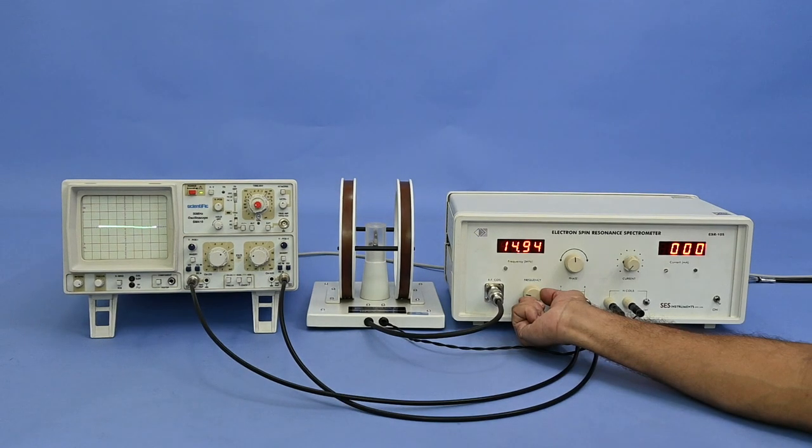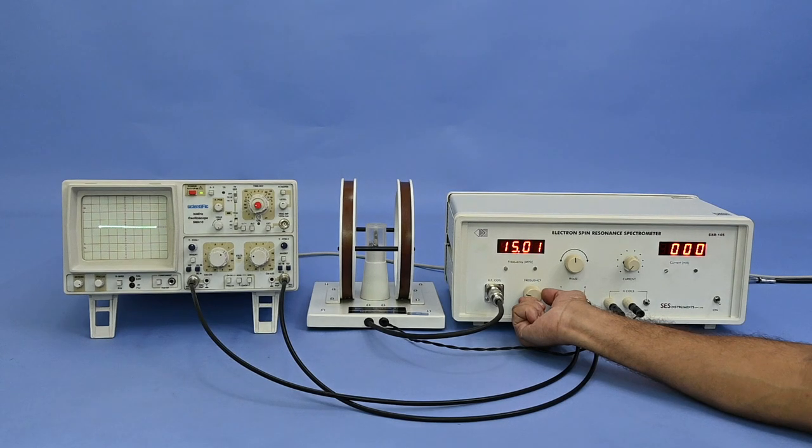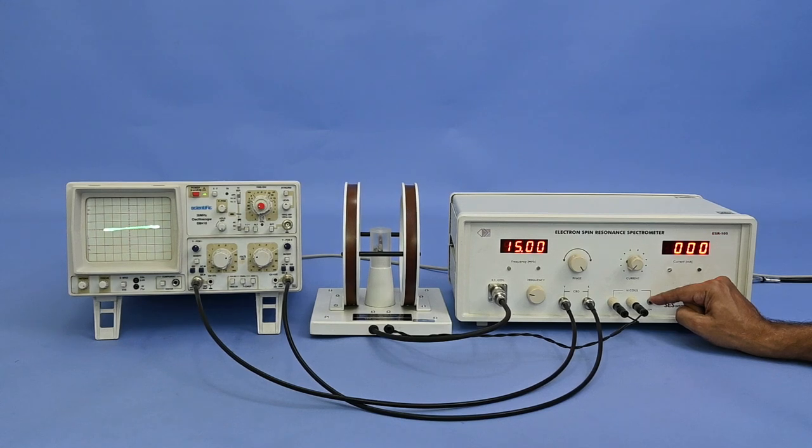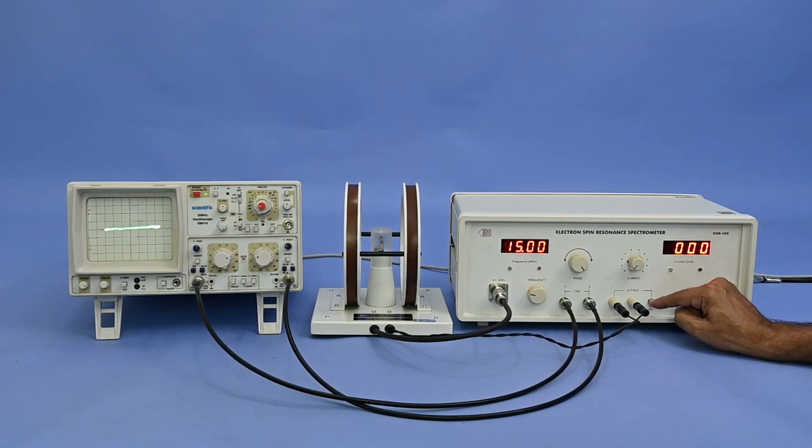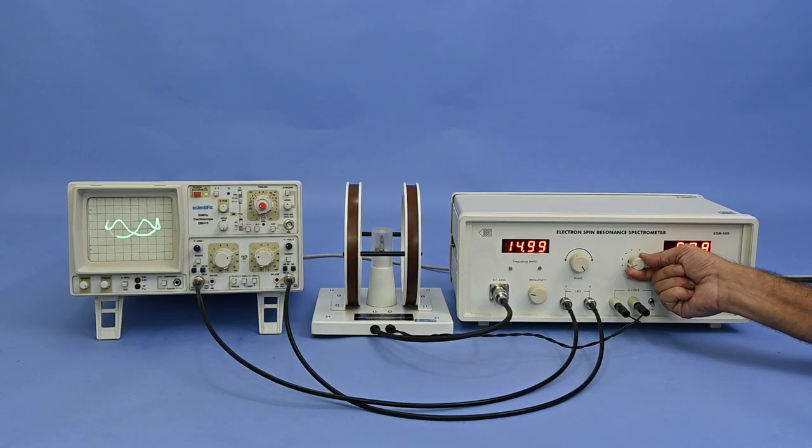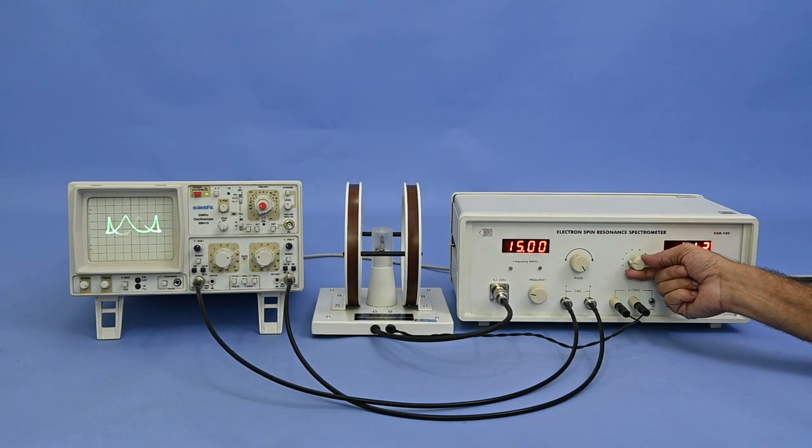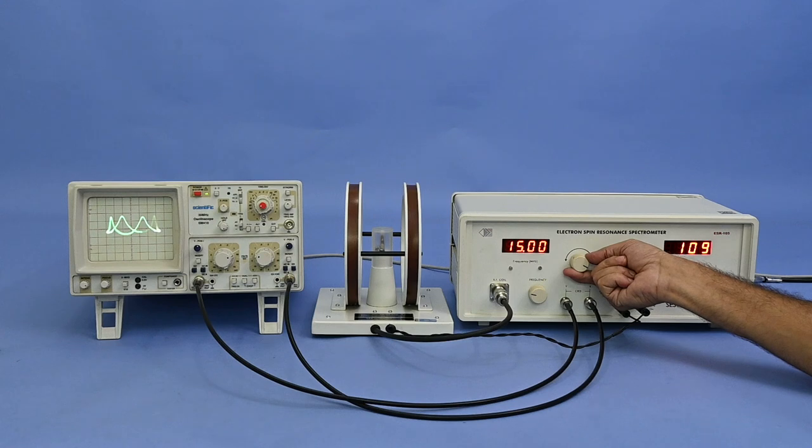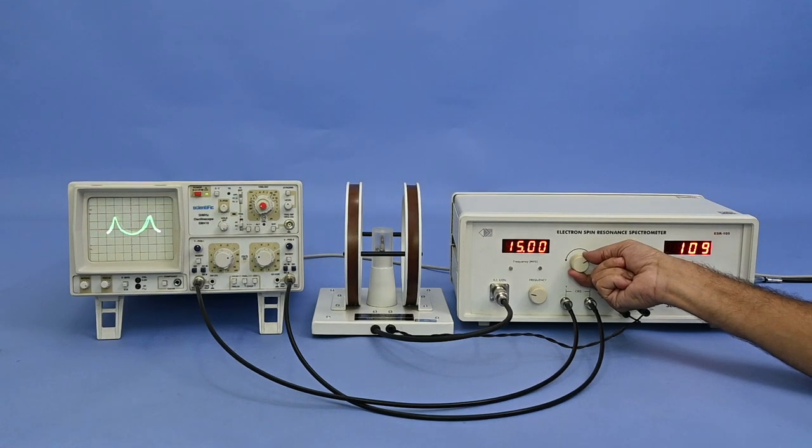Now set the frequency, say 15 MHz. Switch on the H coil current power supply and increase the current in steps till we get clear 4 peaks. Adjust phase knob to coincide the 2 peaks with the other 2 peaks.